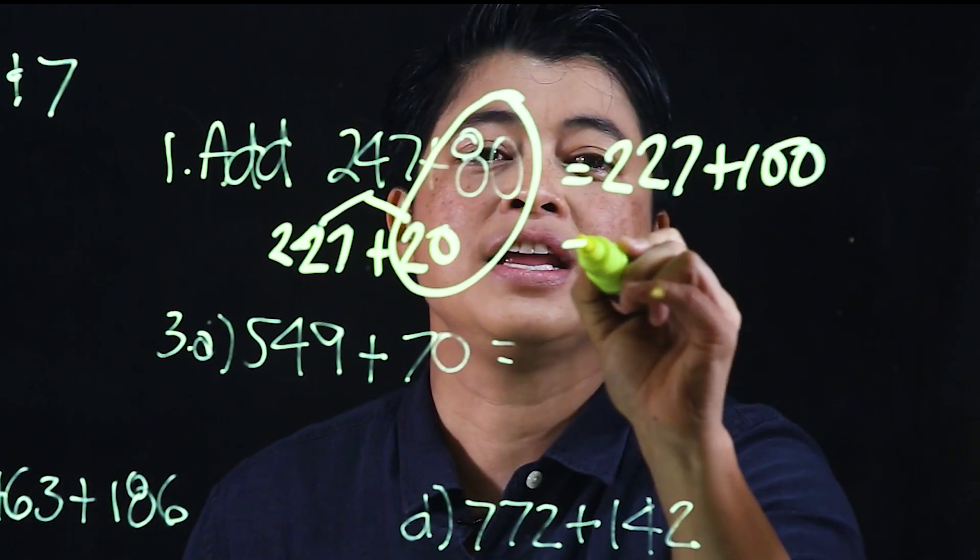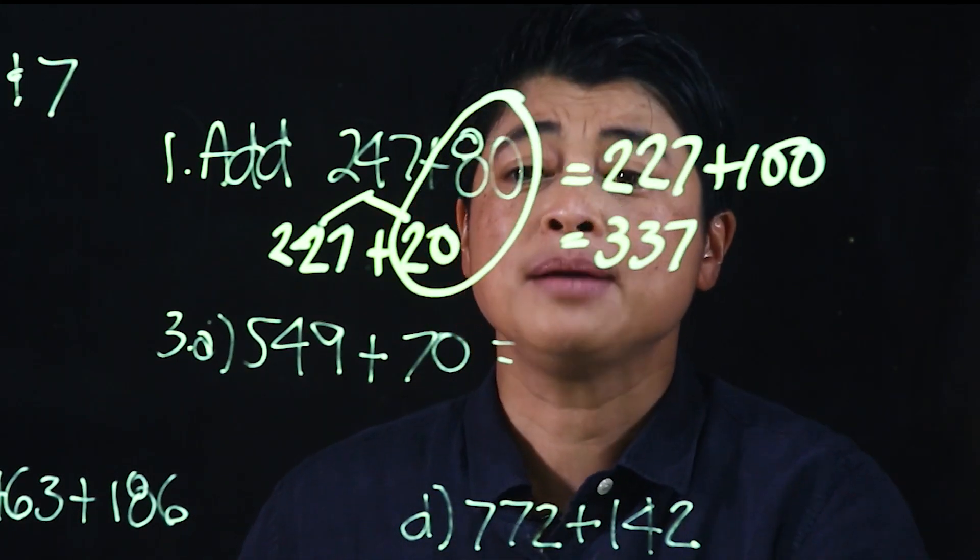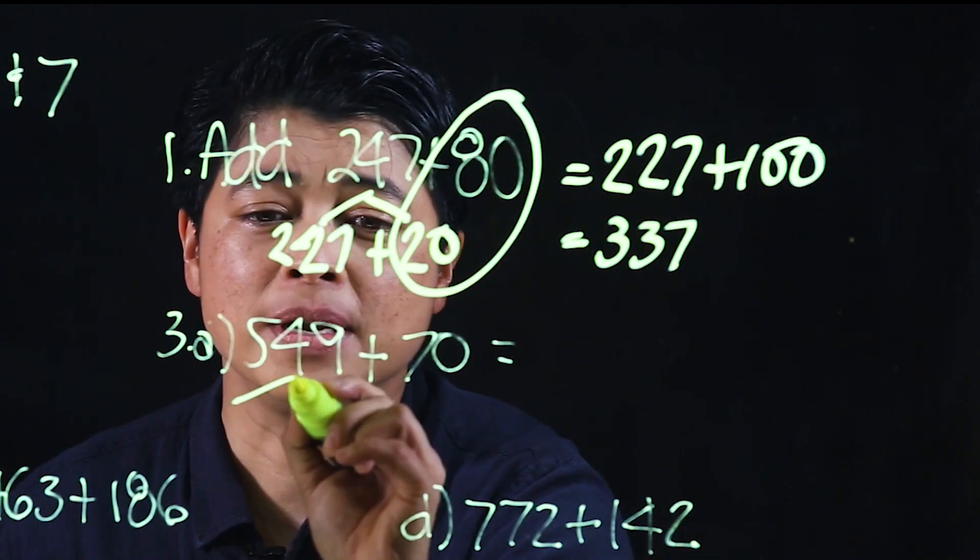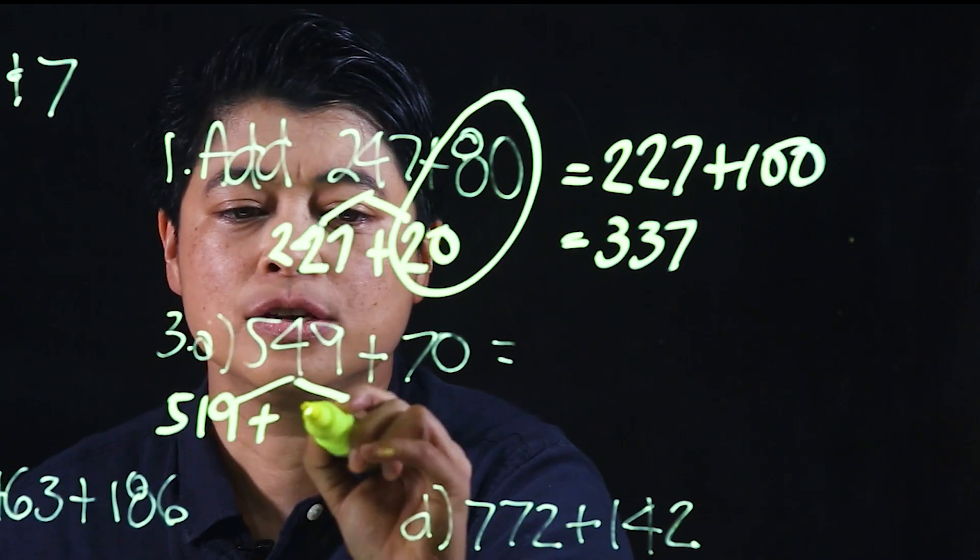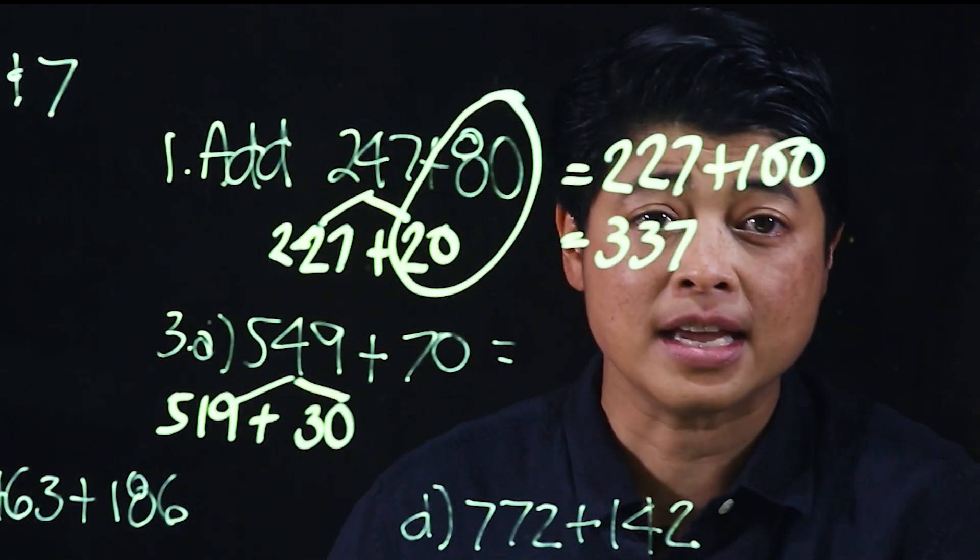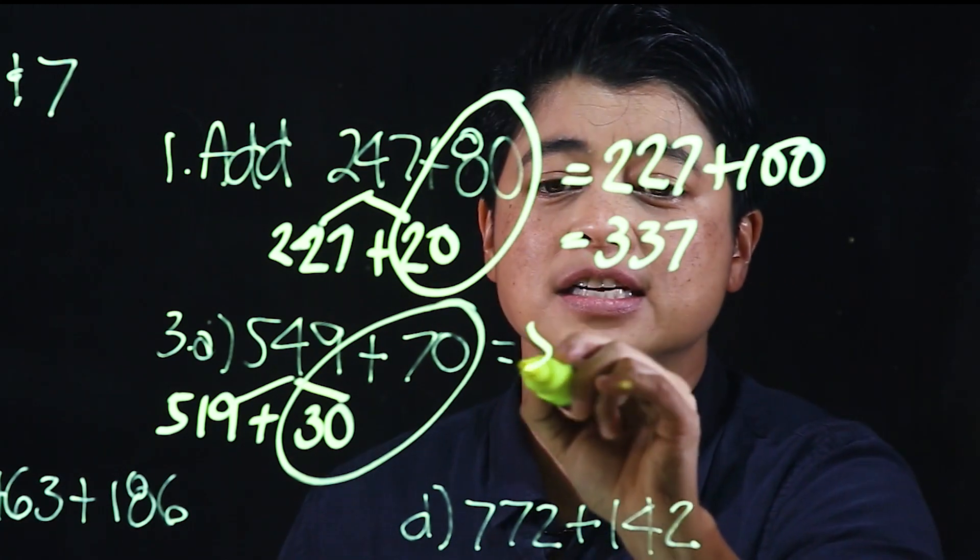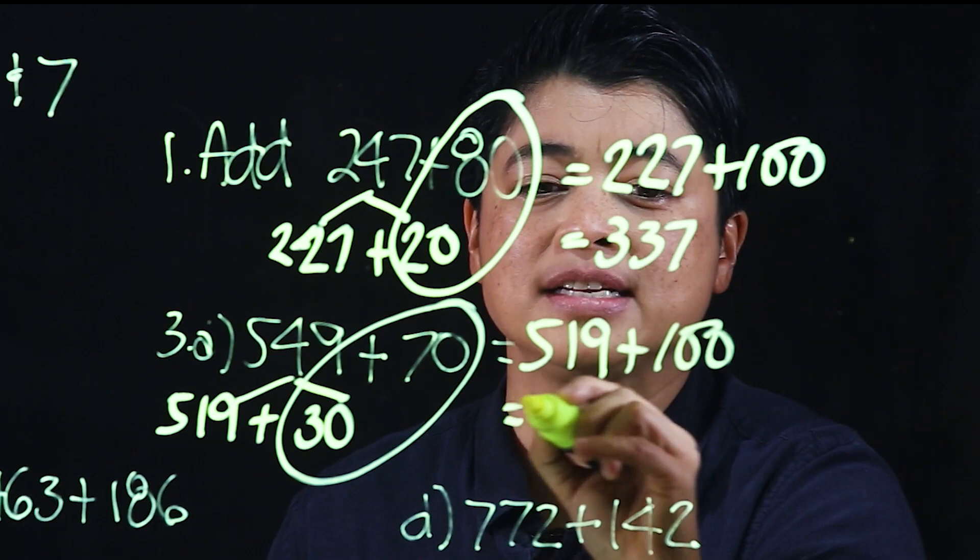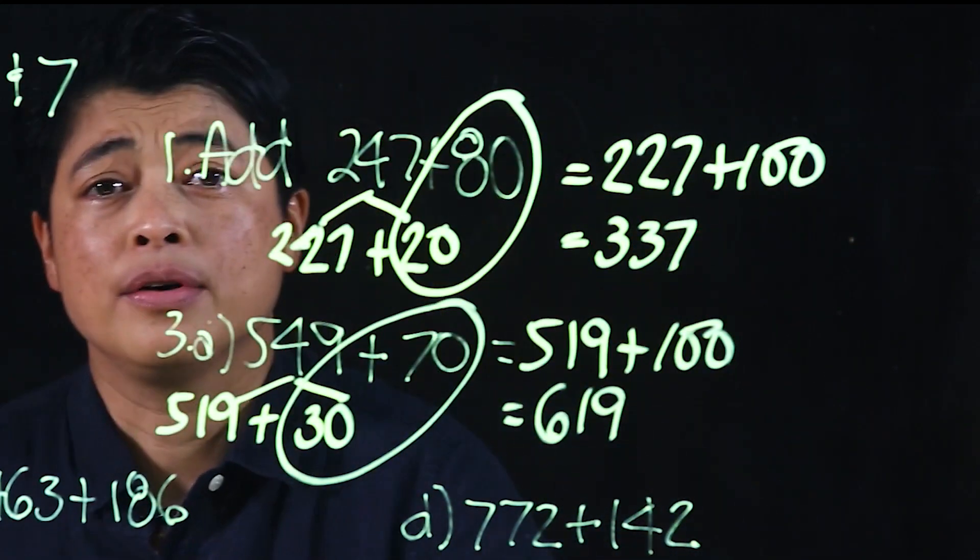Similarly, here's 70. We split this as 519 plus 30 so that we can get the 30 to add up to 100. So this is 519 plus 100, which makes it 619. Now this is our mental math computation. When we get to computational math...